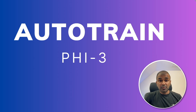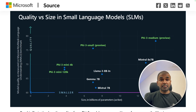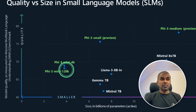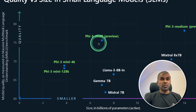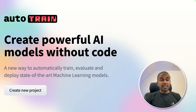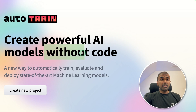This is amazing. Now we are going to see about AutoTrain. Using that we are going to fine-tune the Phi-5.3 model. Phi-5.3 is released by Microsoft and you are able to fine-tune all these models. AutoTrain is an easy library to fine-tune a model without any code.